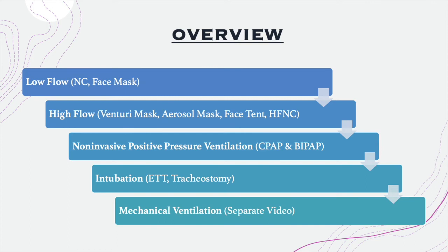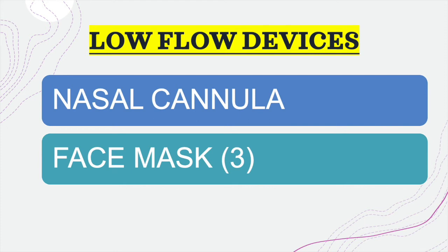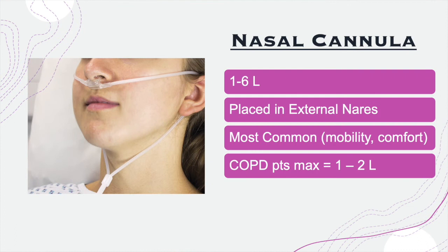Low flow devices consist of nasal cannulas and face masks. The nasal cannula delivers one to six liters of oxygen and is placed in the external nares. It is the most commonly used oxygen device due to its mobility and comfort for the patient. An important fact: the maximum amount of oxygen COPD patients can receive via nasal cannula is one to two liters, since we want to provide only a small amount to avoid eliminating their hypoxic drive.